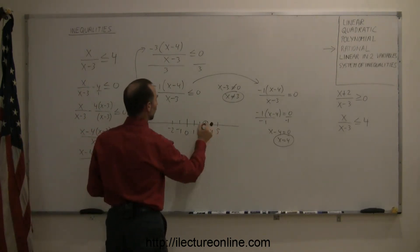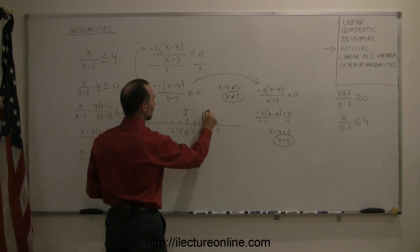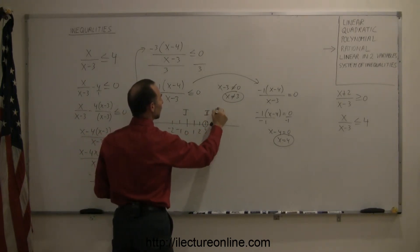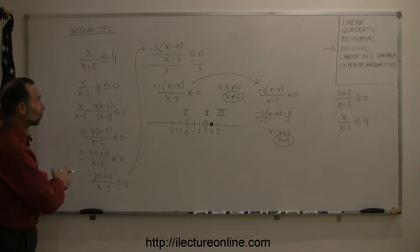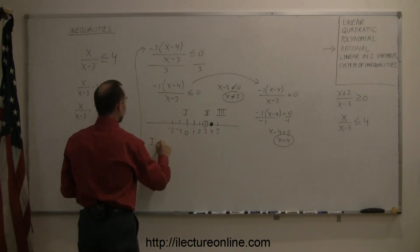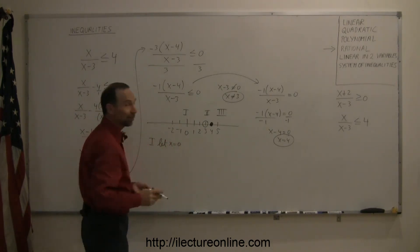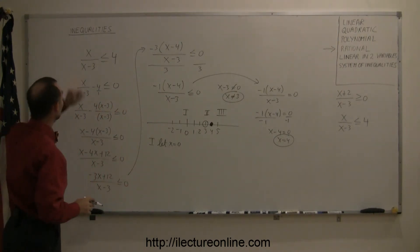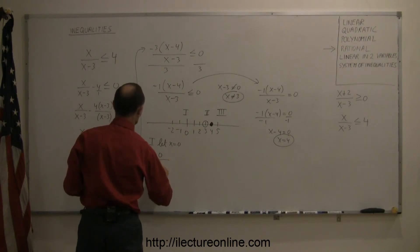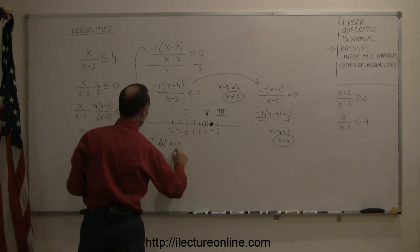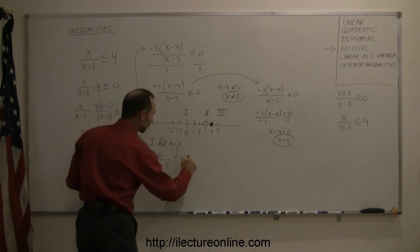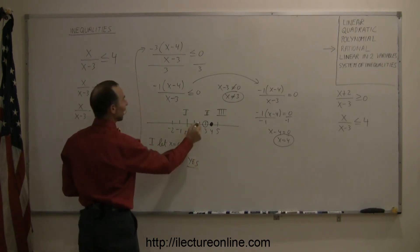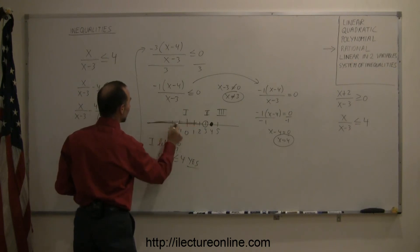We can see that we have three regions: region 1 to the left of 3, region 2 between 3 and 4, and region 3 to the right of 4. We take a test point from each region to see if it satisfies the inequality. Starting with region 1, we let x equal 0 — if you can plug in 0, that's easiest. Looking at our original inequality: 0 divided by 0 minus 3 — is that less than or equal to 4? No matter what the denominator is, the numerator is 0, and 0 is always less than 4, so the answer is yes. Everything to the left of 3 is part of the solution.